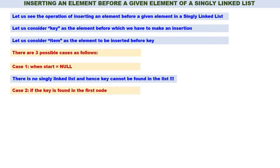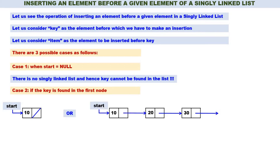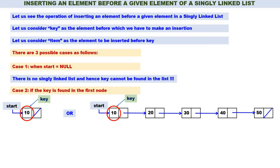Case 2: if the key is found in the first node. This applies when there is only one node and the key is found in that node, or when the linked list has many nodes but the key is found in the first node. Case 3: if the key is found anywhere after the first node.